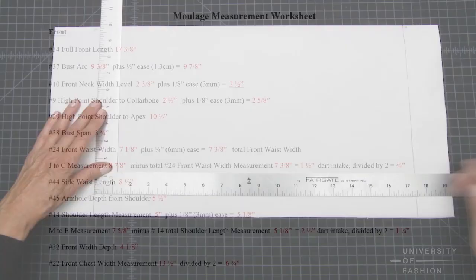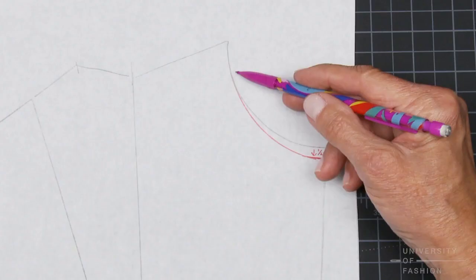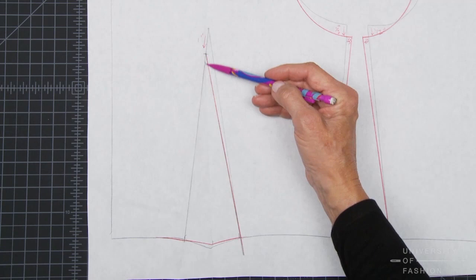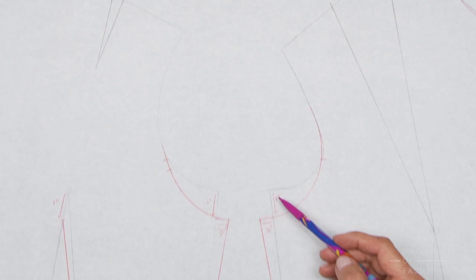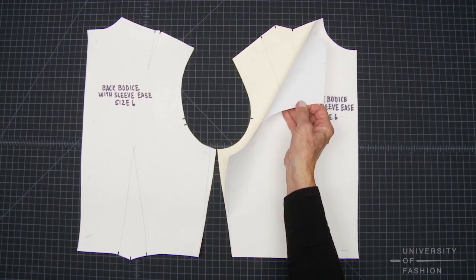You will also learn how to add ease to convert the moulage to a sleeveless bodice sloper for use with a sleeve. These slopers will become the foundation for many of your future designs.